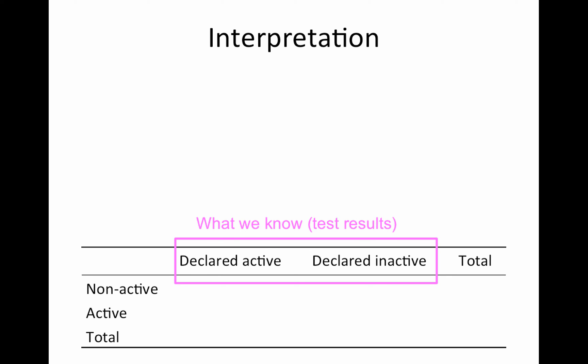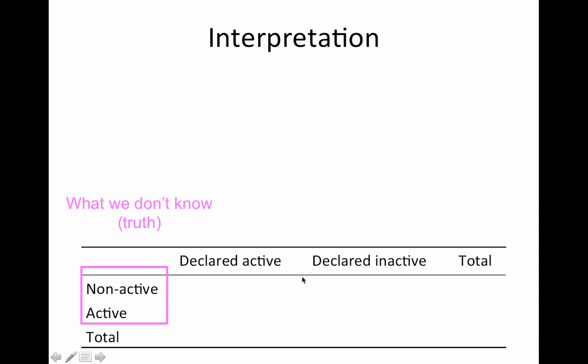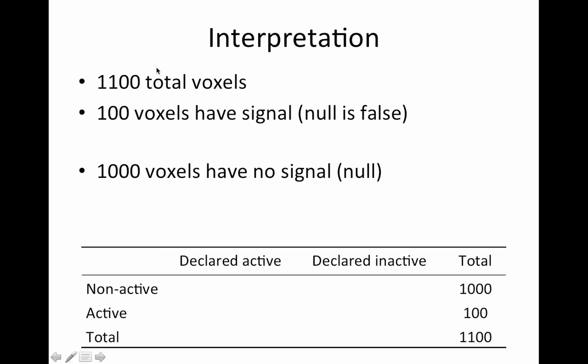So here's the interpretation. You'll see this two by two table a lot. The columns are what we see from our test results: you either declare a voxel active or you declare it inactive. Then what we don't know: the truth, whether it really is non-active or active. Let's pretend an oracle told us these values for the rows. Let's assume we have 1100 total voxels. 100 voxels actually have signal, so the null is false, and a thousand voxels have no signal, so they're null.